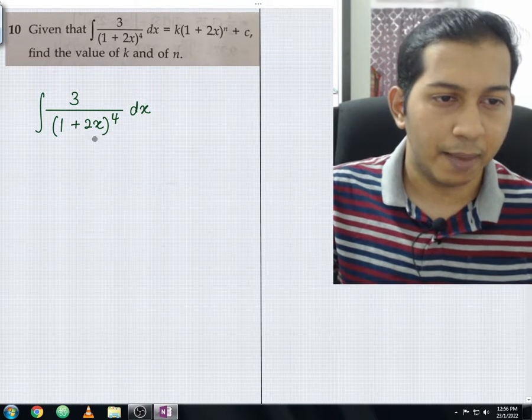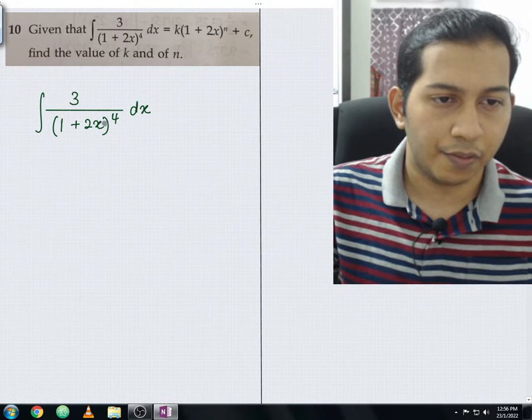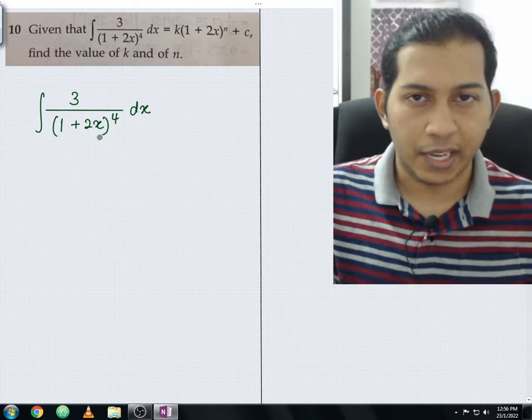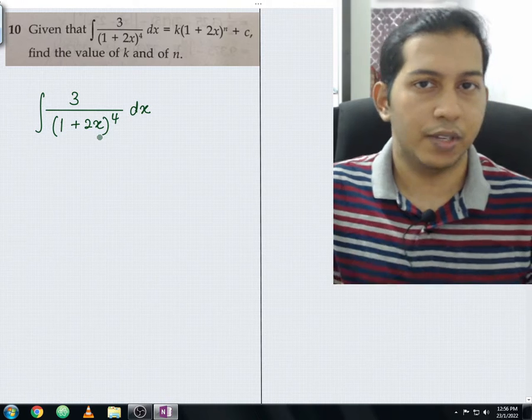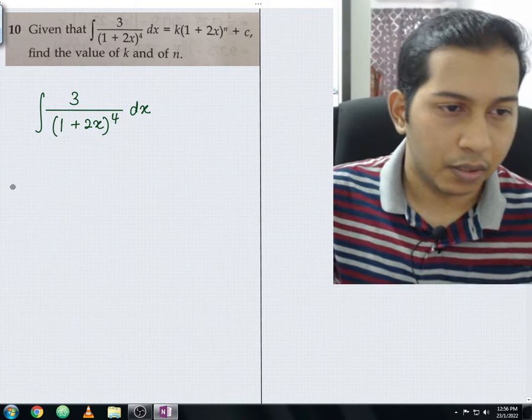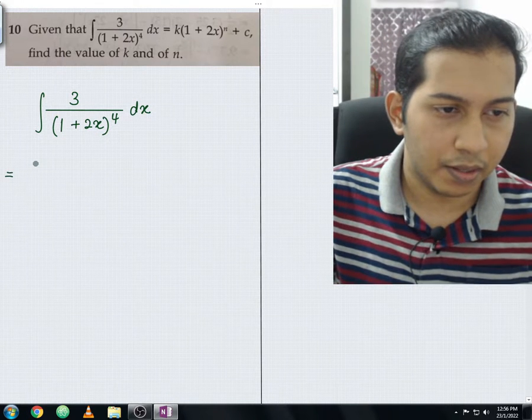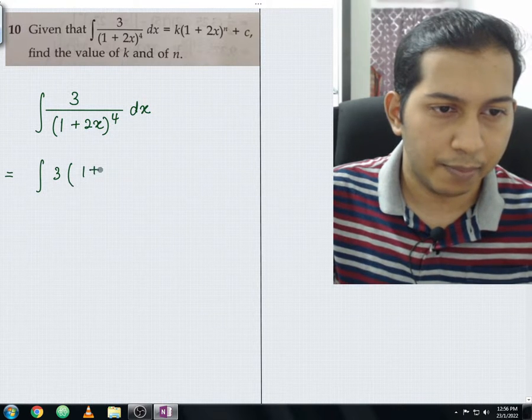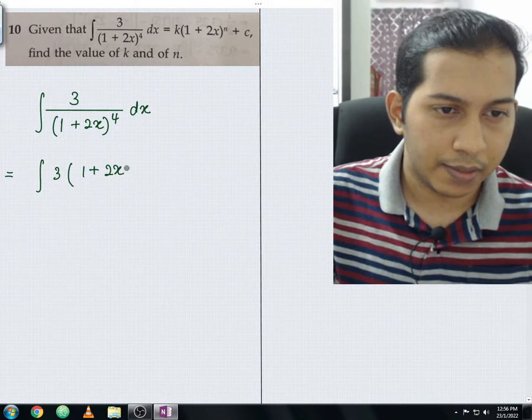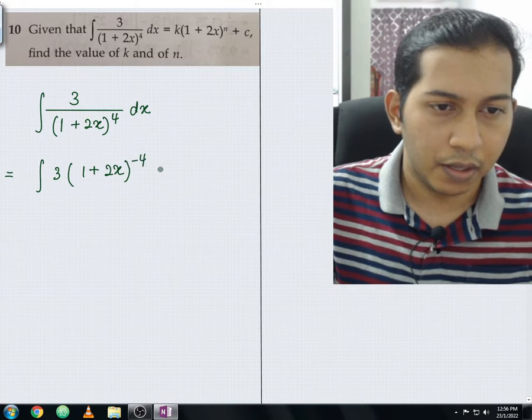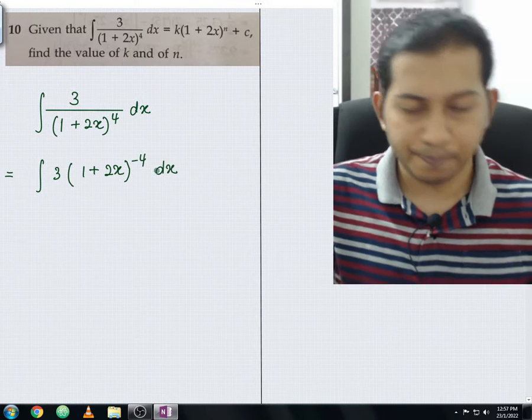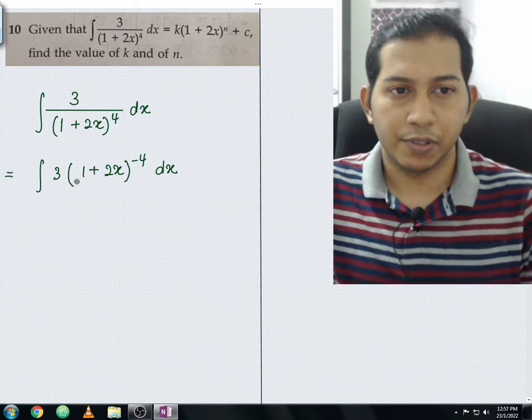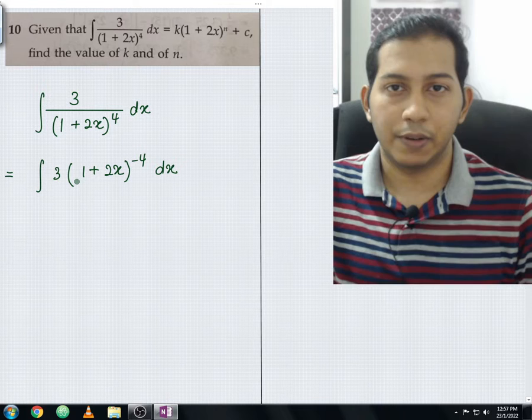For the next step, I'm going to move this (1+2x) to the power of 4 to the numerator. So the index 4 will change from positive into negative. From here, you'll be getting 3 times (1+2x) to the power of negative 4 with respect to dx. Once everything okay, now you can proceed to perform the integration.